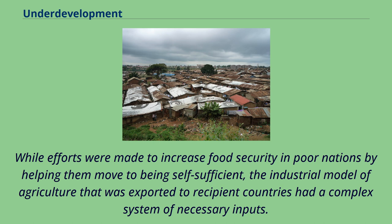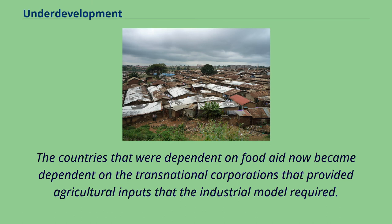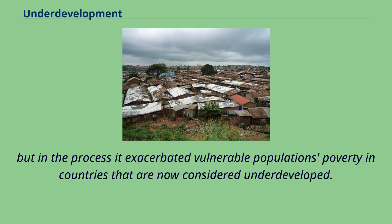While efforts were made to increase food security in poor nations by helping them move toward self-sufficiency, the industrial model of agriculture exported to recipient countries had a complex system of necessary inputs. In order for yields to actually increase, farmers needed fertilizers, pesticides, and new irrigation systems — a costly chain of requirements that cut profits for the farmers even when their yields rose. The countries that were dependent on food aid now became dependent on the transnational corporations that provided the agricultural inputs the industrial model required. The Green Revolution was able to increase crop yields, but in the process it exacerbated vulnerable populations' poverty in countries that are now considered underdeveloped.